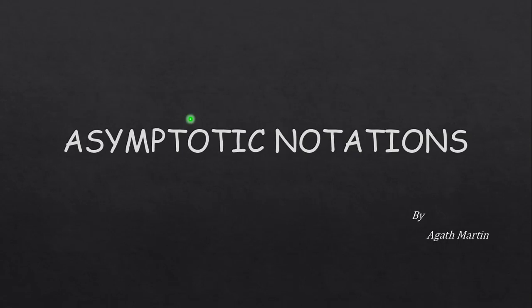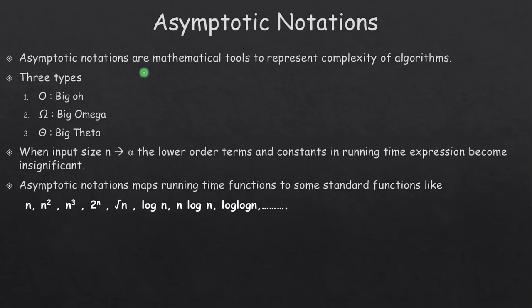In this video I would like to discuss asymptotic notations. Asymptotic notations are mathematical tools to represent the complexity of algorithms. Mainly there are three types: Big O, Big Omega, and Big Theta. When the input size tends to infinity and is very large, the lower order terms and constants in the running time expression become insignificant. The main purpose of asymptotic notation is to map running time functions to some standard functions like n, n², n³, 2ⁿ, √n, log n, n log n, log log n, etc.